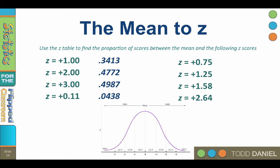For a z of 0.75, 0.2734. For z equals 1.25, 0.3944. For z equals 1.58, 0.4429.